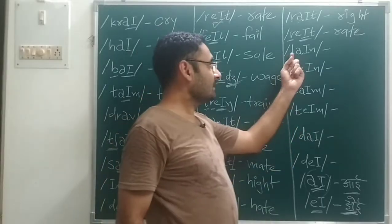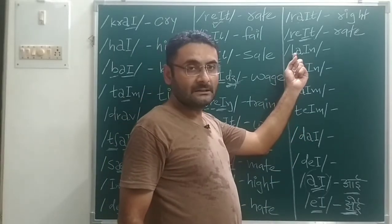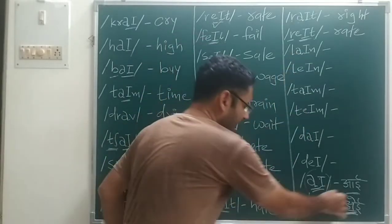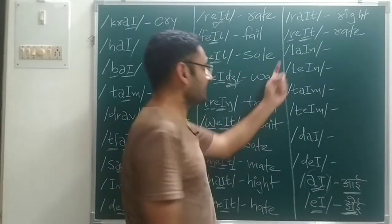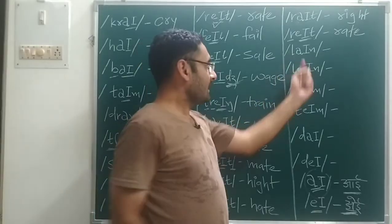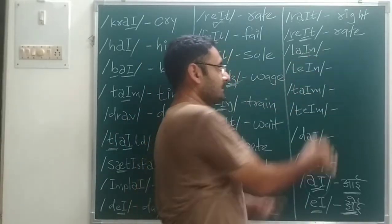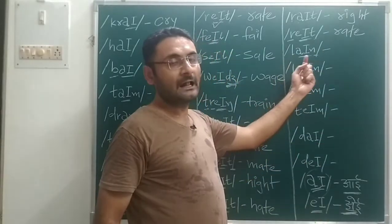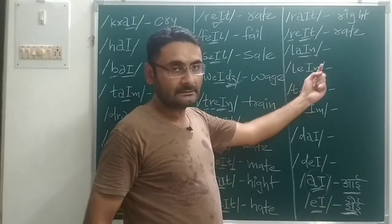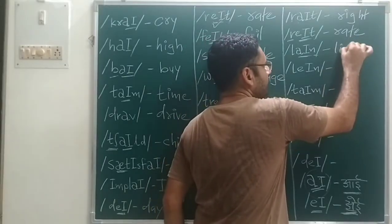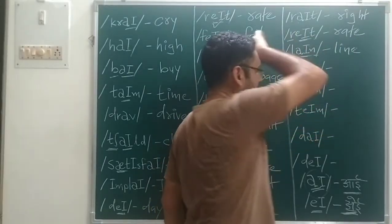Next: L sound, then I sound — L, I, N — working through: L, I, N — that gives us 'line'. Okay.